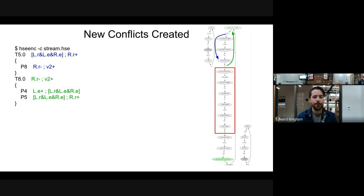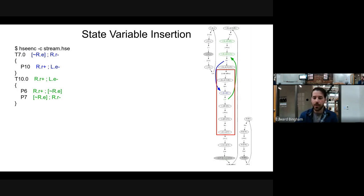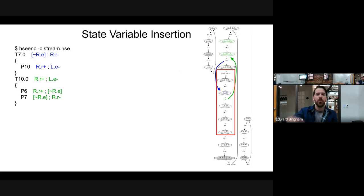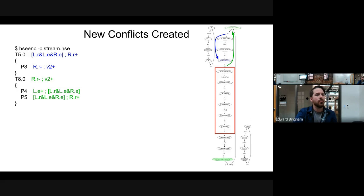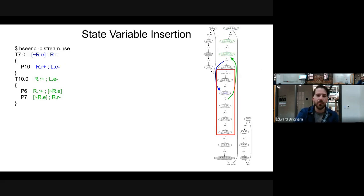Why? We're seeing V2 up firing where it shouldn't, right before R.R up. And we're seeing R.R up firing where it shouldn't, right before V2 up. If we go back to our original HSE, pre-state variable insertion, there weren't conflicts on these because there wasn't a transition happening in that state — it was just a guard. But in adding that transition on V2, we've added a transition dependent on that state.